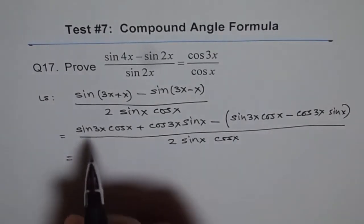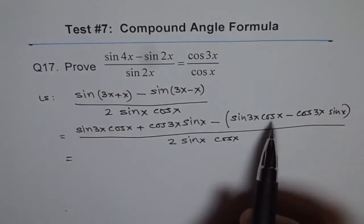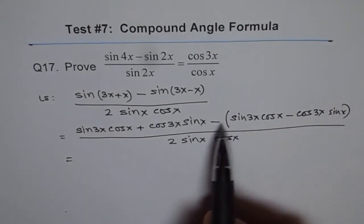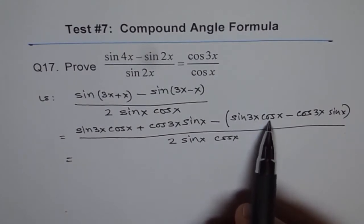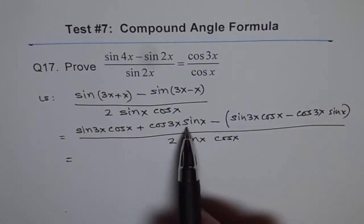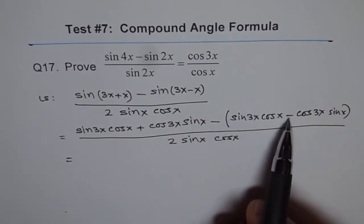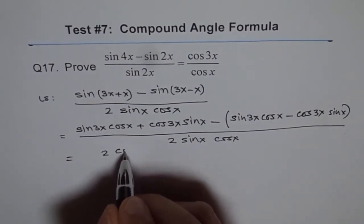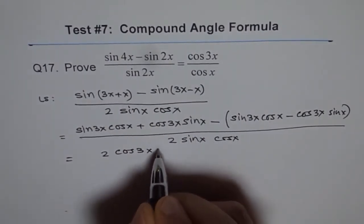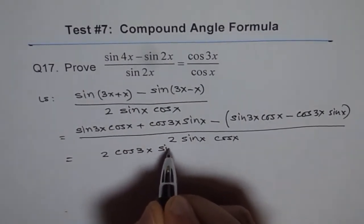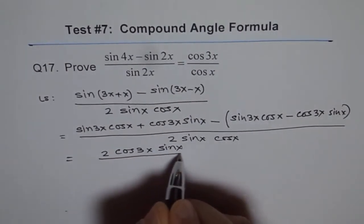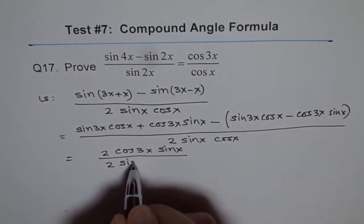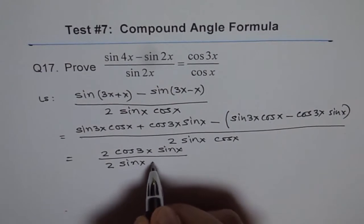Looking at the numerator, sine 3x cos x minus sine 3x cos x equals zero, and the minus minus gives us plus. This simplifies to 2 cos 3x sine x, divided by 2 sine x cos x.